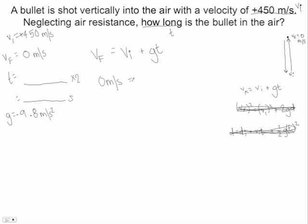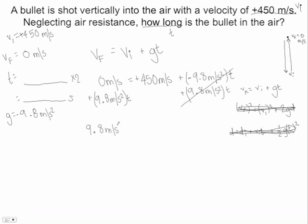Our final velocity, this is our velocity at the very top, is zero. Our initial velocity is 450 meters per second. Our gravity is negative 9.8 meters per second squared, and then we have a time. So what I'm going to do is, this is a negative right here, so I'm going to add this 9.8 meters per second squared t to both sides. Remember, t has to come with it, because the t multiplies by the 9.8, so they're like attached.